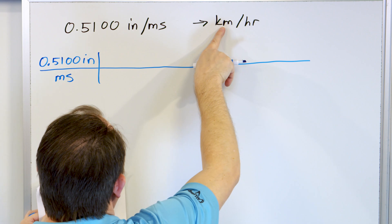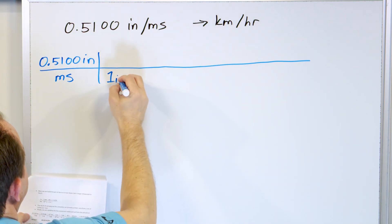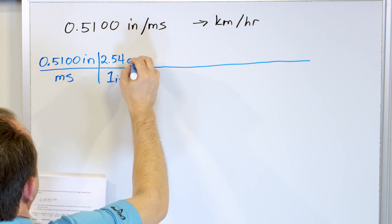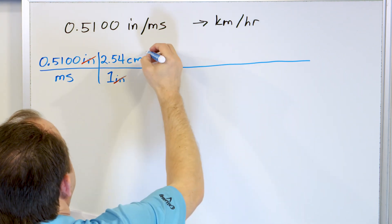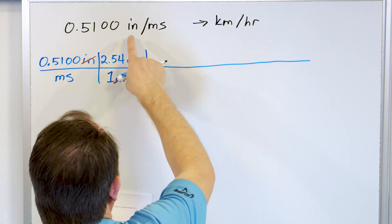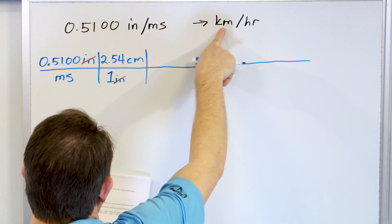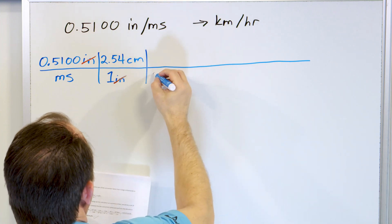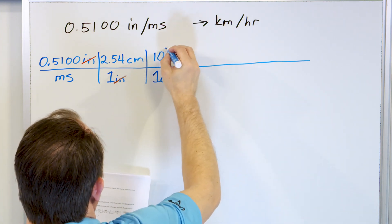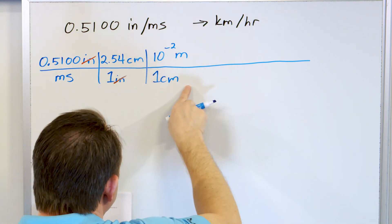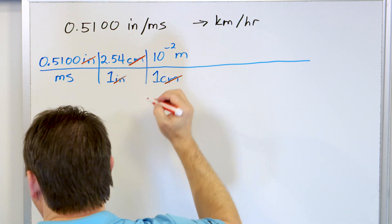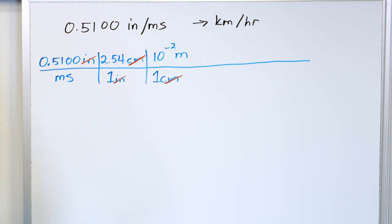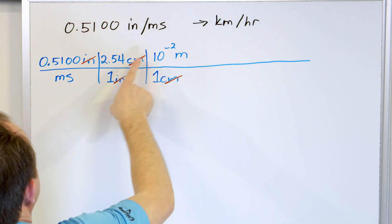The inches need to be converted to kilometers. I know that one inch is 2.54 centimeters, so I write it so that inches cancels. Now I'm left with centimeters, but I want kilometers. I know that one centimeter is 10 to the minus two meters, and I write it so centimeters cancels. If I stop now I'd be in meters per millisecond, but I want kilometers on top.